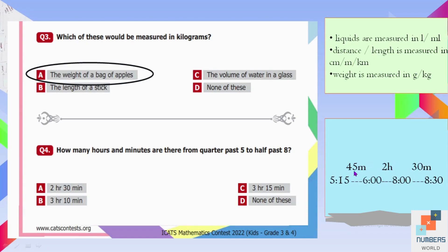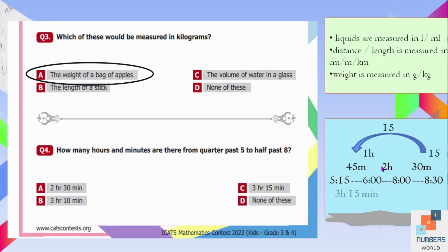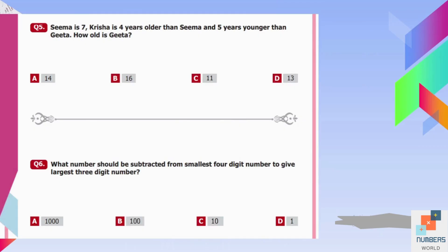We need to complete the hours first. There are 60 minutes in one hour. We give 15 minutes from the 30 to the 45 to complete one hour, leaving 15 minutes. So we have one hour plus two hours equals three hours, and 15 minutes remaining. C is our answer: three hours and 15 minutes.